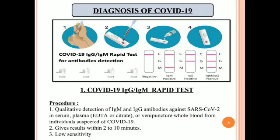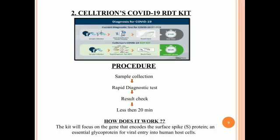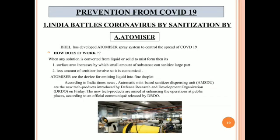This is the diagnosis of COVID-19. One method is based on IgM antibodies, but it has very low sensitivity. Another method is based on S protein detection, which involves the entry of the virus into the host cell.